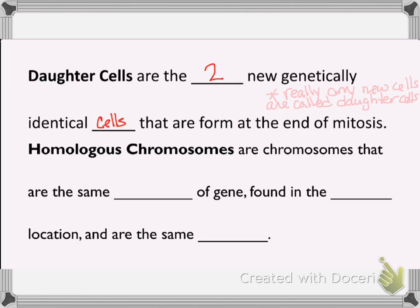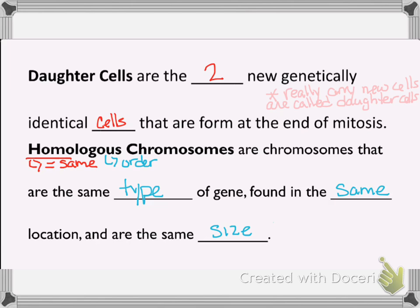Our next term is homologous chromosomes. The prefix homo equals same, and the -ologous part is order, so this is talking about the order of the genes. Homologous chromosomes are chromosomes that are the same type of gene, found in the same location, and are about the same size — not always exactly to the millimeter the same size, but when you look at them they're in the right neighborhood.